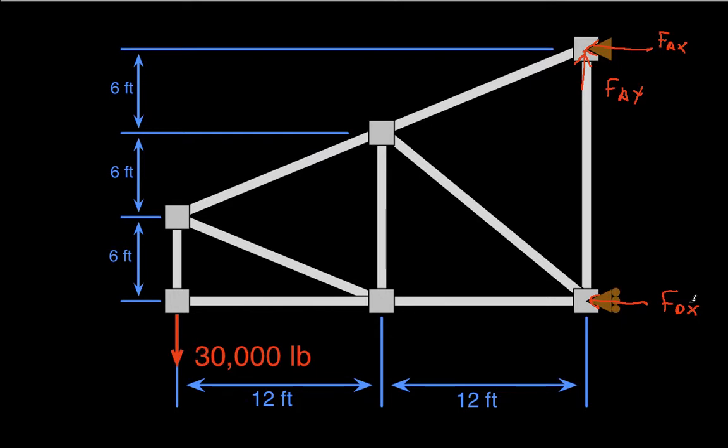Okay, so we now can apply the three static equilibrium conditions. The first is that the sum of the moments is equal to 0. And I think I will sum the moments about point A because FAX and FAY go through point A. By using the moments about point A, we'll be able to get FDX from the expression directly. So the sum of the moments is equal to 0.